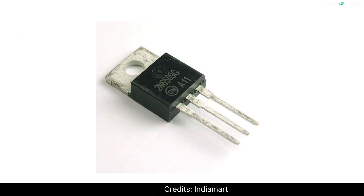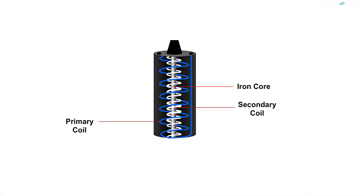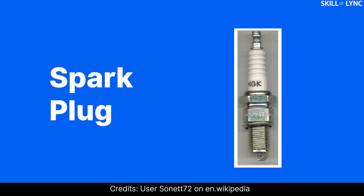The SCR is a current-controlled device which allows current to pass through it only after it gets triggered. It consists of three terminals, out of which one acts as a gate. The SCR will conduct only when a small current is supplied to the gate. There is also an ignition coil consisting of a primary and secondary coil wound over an iron core, which acts as a transformer stepping up the supplied voltage. Next to this, we have a spark plug consisting of a central and a ground electrode.